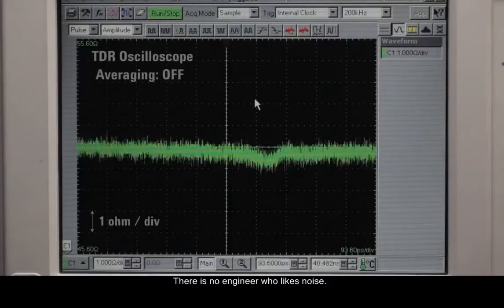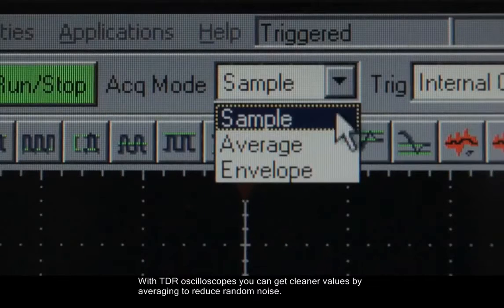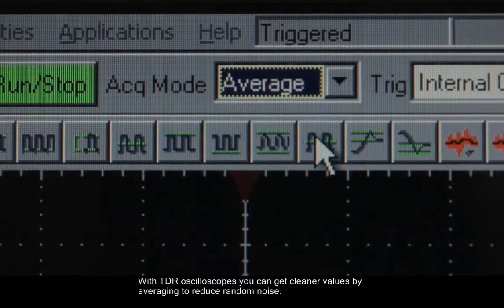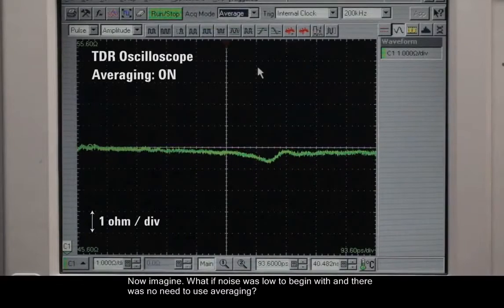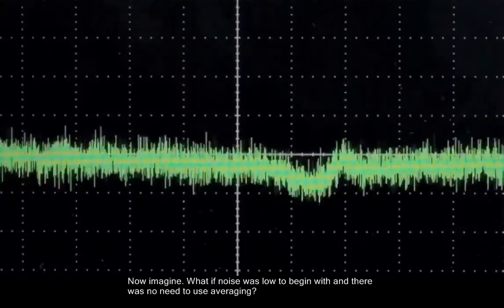There is no engineer who likes noise. With a TDR oscilloscope, you can get cleaner values by averaging to reduce random noise. Now imagine, what if noise was low to begin with and there was no need to use averaging?